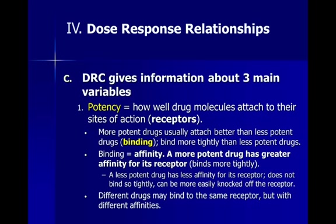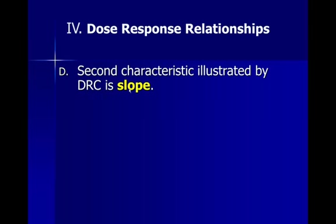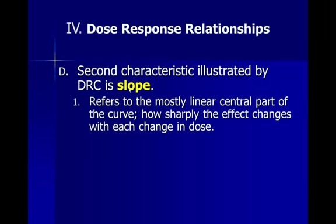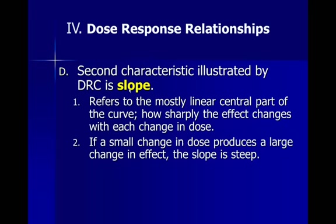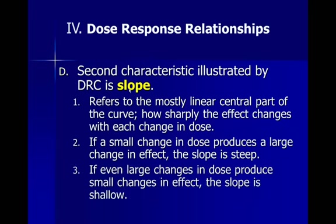Different drugs may bind to the same receptor but with different affinity — if you give two drugs, one is probably going to bind more strongly with greater affinity. The second characteristic is illustrated by the dose-response curve slope, referring to the most linear central part of the curve — how sharply the effect changes with each change in dose. If a small change in dose produces a large change in effect, the slope is steep. If even large changes in dose produce small changes in effect, the slope is shallow. Essentially, this tells us about how strong a drug is — a little bit of drug causing a large effect indicates a potent drug.